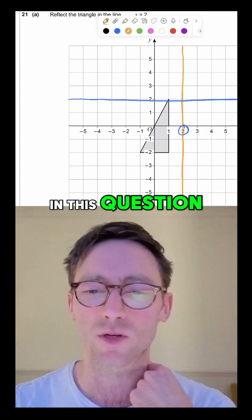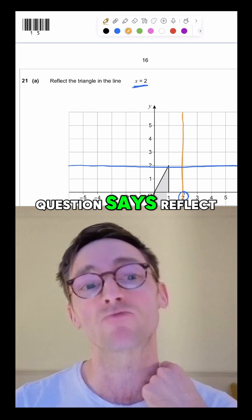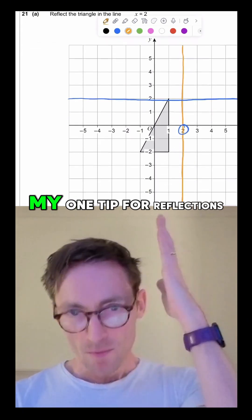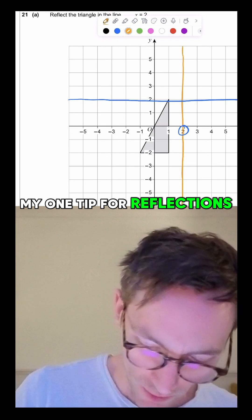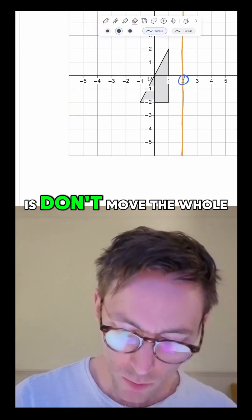So x equals 2 is that vertical line and the question says reflect. My one tip for reflections, so let me get rid of this line, my one tip for reflections is don't move the whole shape, move each point.